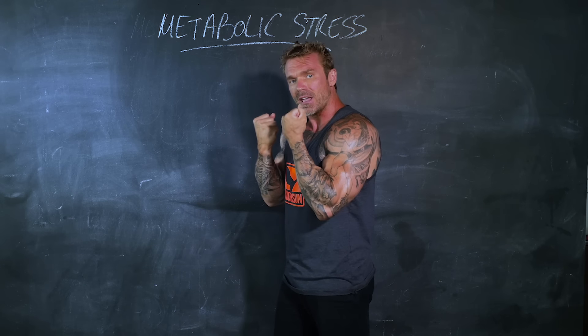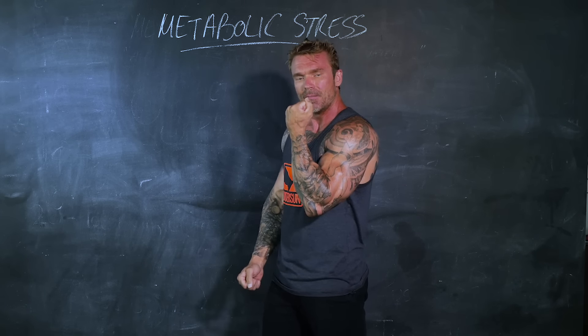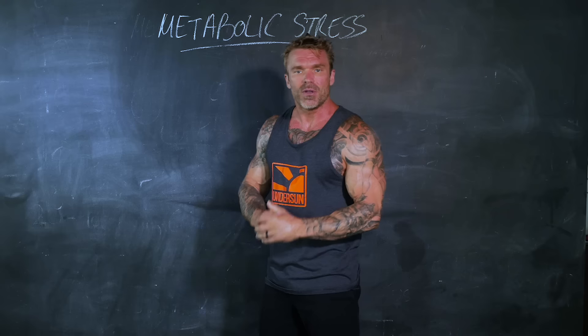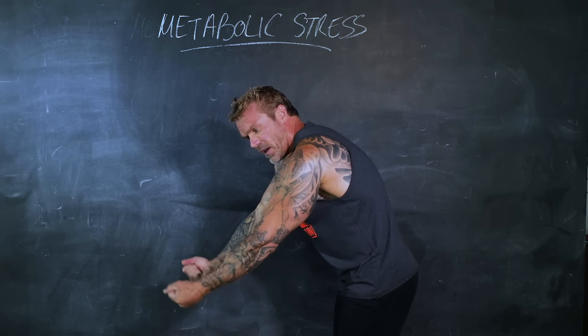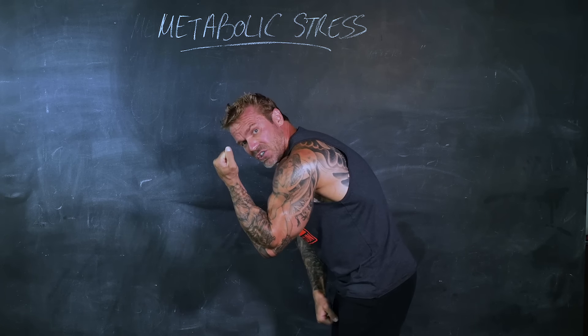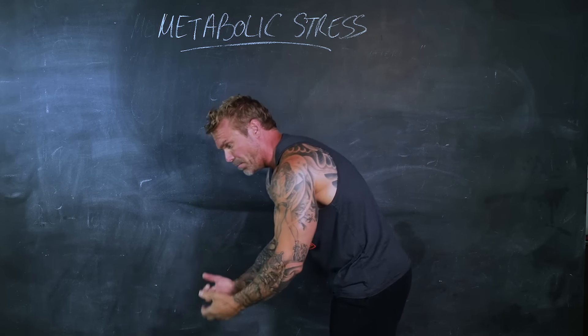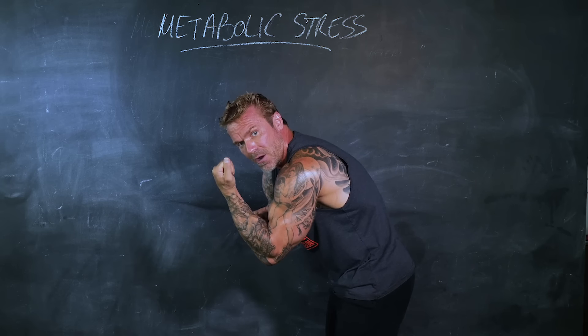The way you train matters too. When the muscle is at peak contraction — its most shortened phase — that's when occlusion happens most and the pump is greatest. You want as much resistance at the top of the range of motion as possible, which is why isometric squeezing is so important. For biceps, preacher curls or spider curls are great because you maintain tension at the top of the range of motion, unlike standing curls where tension drops off at the peak.